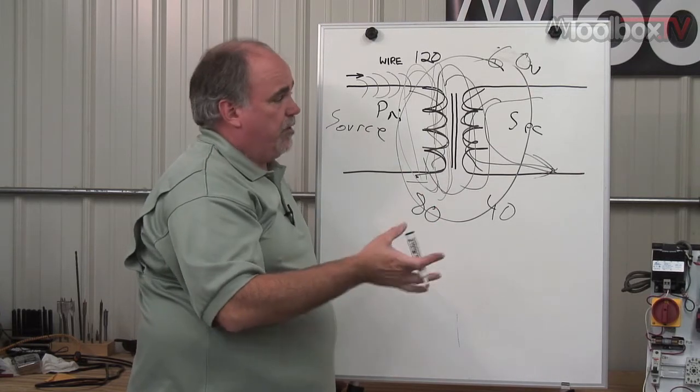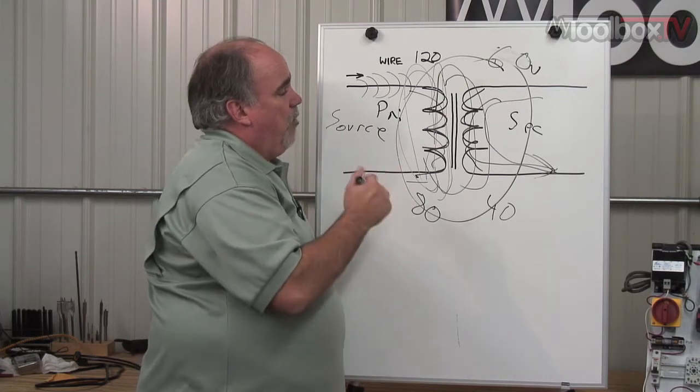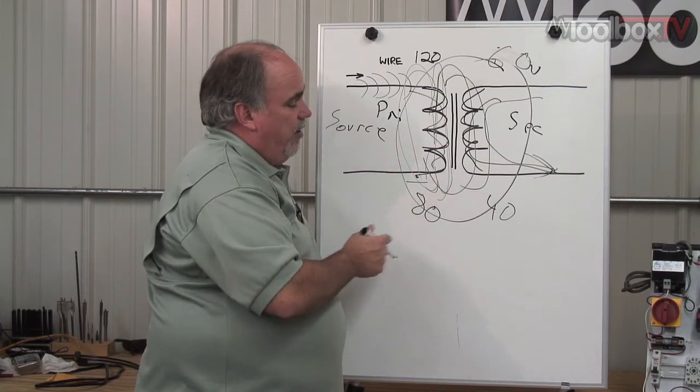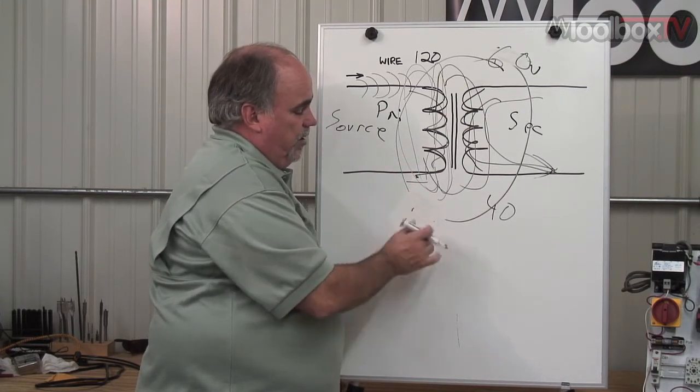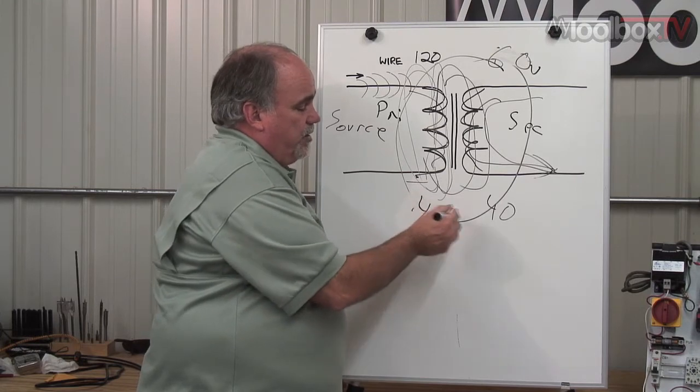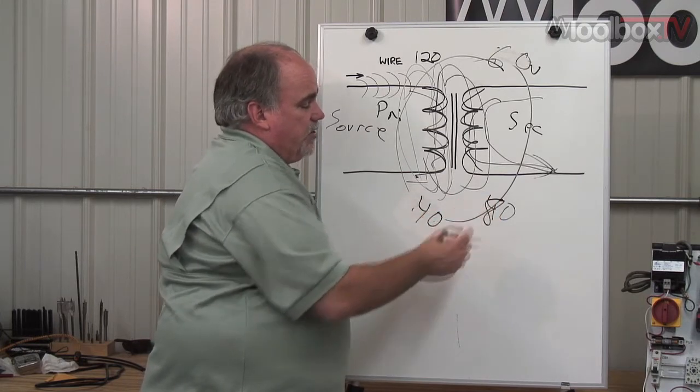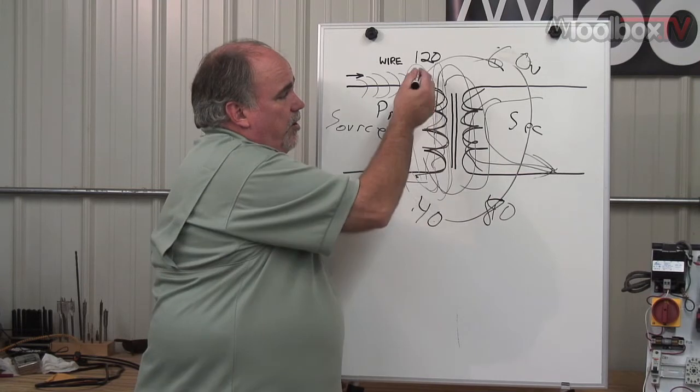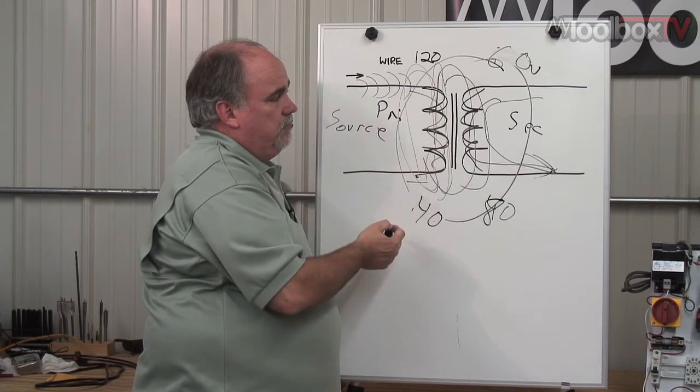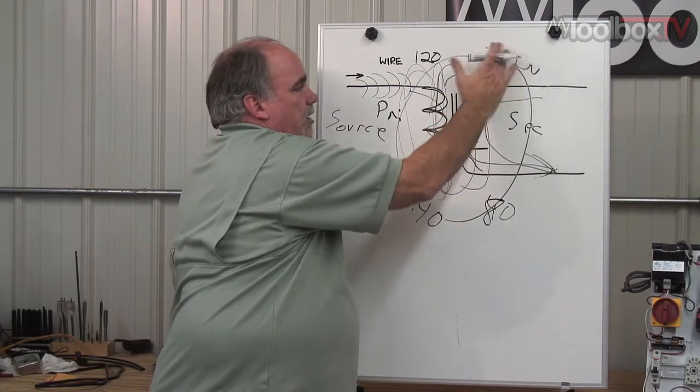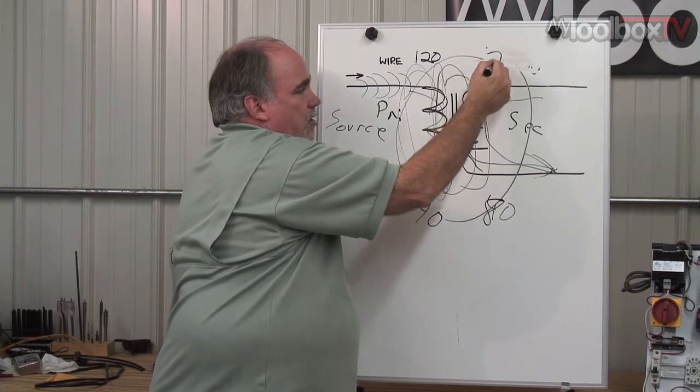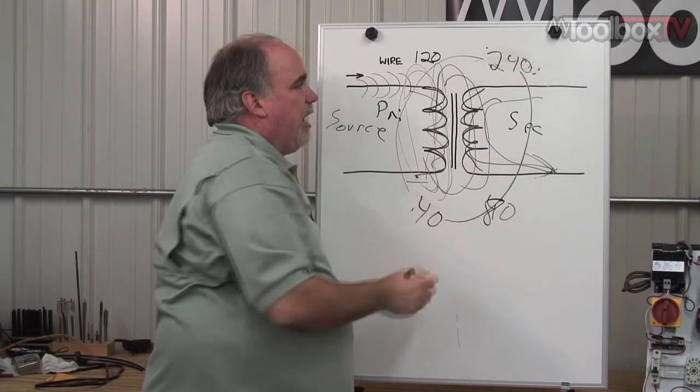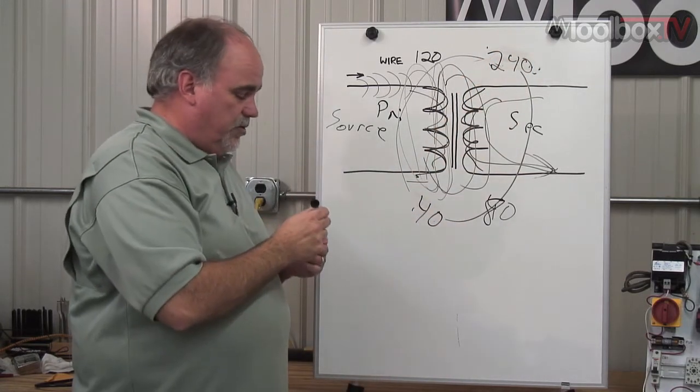And you can do the same thing backwards. You can make a step-up transformer, which we do oftentimes. And that way, the primary would have fewer turns. Like you'd have 40 turns on this side and 80 turns on that side. So if you put 120 on the primary, you'd get 240 on the secondary. So you can step up and you can step down the voltage in a transformer.